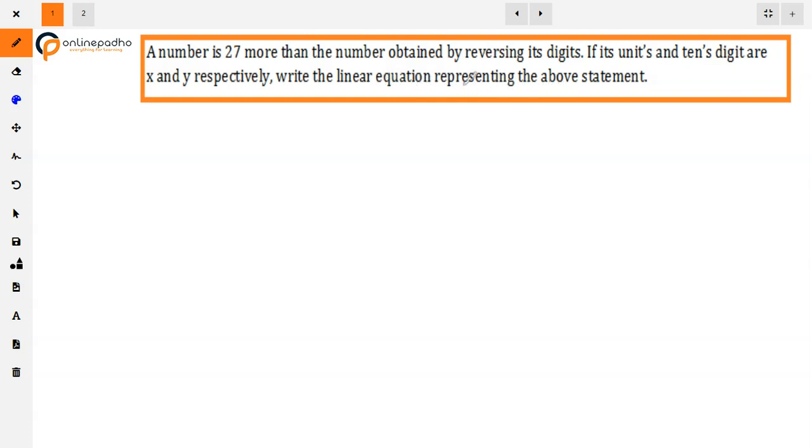What we have given is that a two-digit number's unit digit and tens digit are given as x and y. So what is it saying? If we have a number, it will become x or y. This is 27 more than the number obtained by reversing its digits.